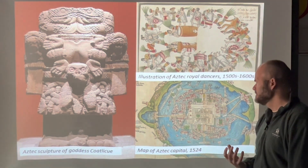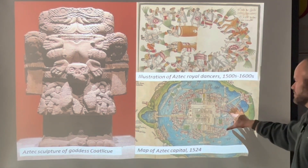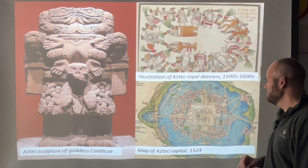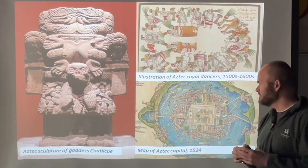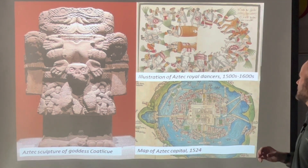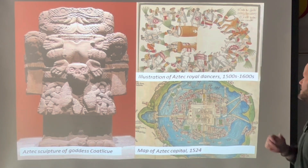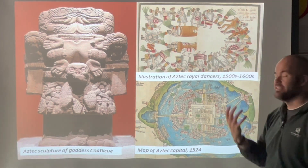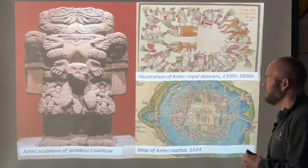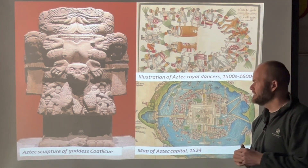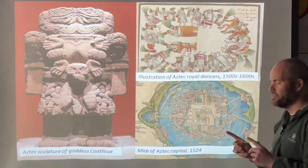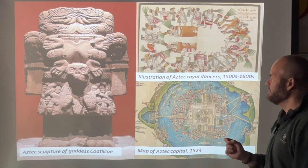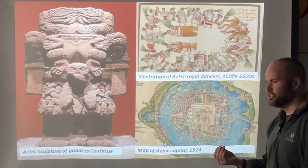Jumping into the Aztecs — we have the map of the Aztec capital created during the 1500s. The Aztec capital, Tenochtitlan, is a really unique city built in the middle of a lake. We have the illustration of the Aztec royal dancers from the 1500s–1600s. We can compare how the Aztecs are depicted in terms of dress to the mural of Teotihuacan and try to make a determination about how likely it is that Teotihuacan influenced the Aztecs — they're separated by time but very close in distance. We also have an Aztec sculpture to consider.